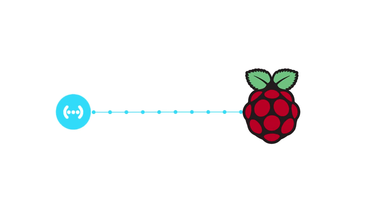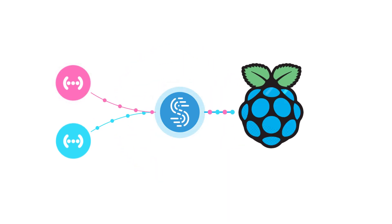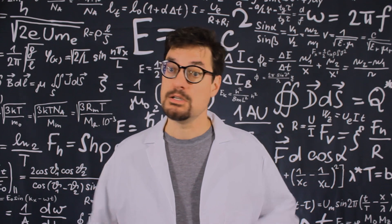Because of Speedify's channel bonding technology, if one of your connections weakens while you're out and about, the other ones will take over to protect you from buffering and packet loss. So let's get started.